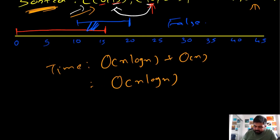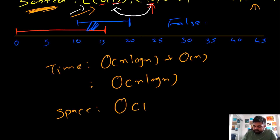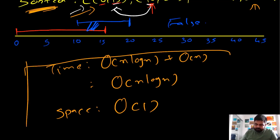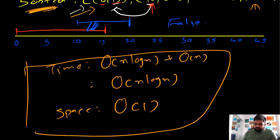In terms of space complexity, we are not using any additional space, so we use O(1) constant space. This is our final approach.